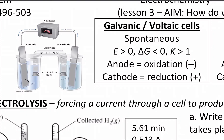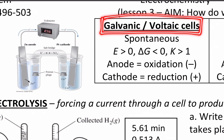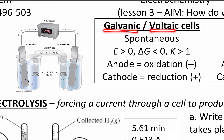In this lesson we're going to look at how we can use electricity to drive non-spontaneous reactions. First, let's recap what we know about spontaneous reactions. When we have a galvanic or voltaic cell — those are just two ways of saying the same thing — that goes with a spontaneous reaction. That means your electrochemical potential is positive, delta G is negative, and K is greater than one.